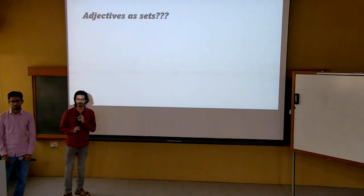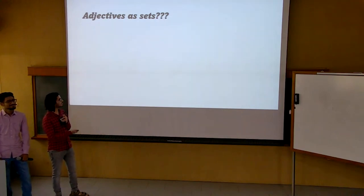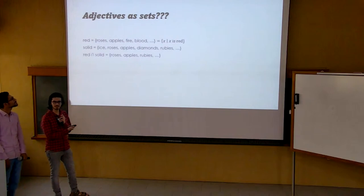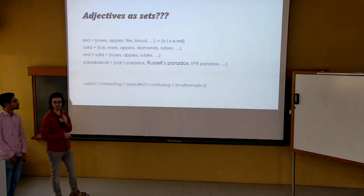We will model each adjective as the set of objects which are described by that adjective. Roses are red, apples are too, with fire and blood I present red to you, which is simply the set of all red objects. We can have the set of solid objects, the set of solid red objects formed by the intersection of the previous two sets, paradoxical objects, or objects which are useful, interesting, beautiful, confusing, which is the singleton set of mathematics.